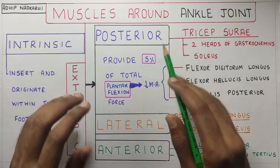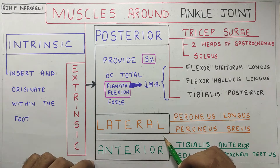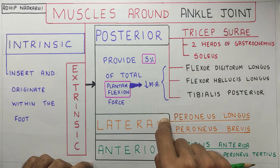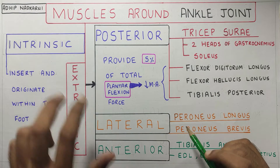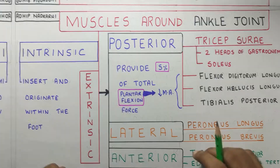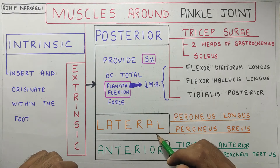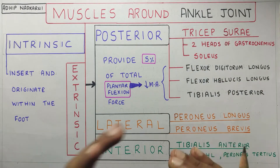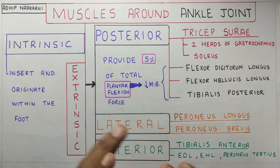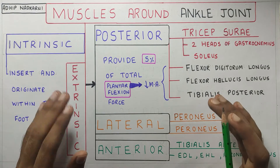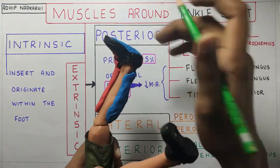In this video we'll be talking about the posterior and lateral compartments; in the next video we'll cover the anterior compartment and the intrinsic muscles of the foot. There are many compartments and muscles, each with their own function, so it can get complicated. A basic rule to follow: think about the ankle joint axis.